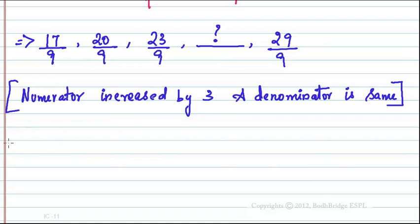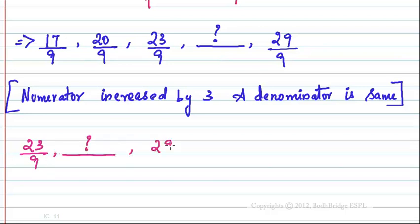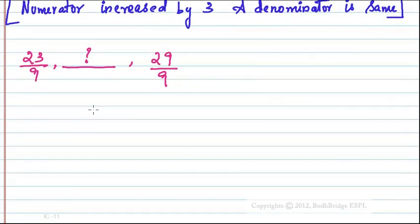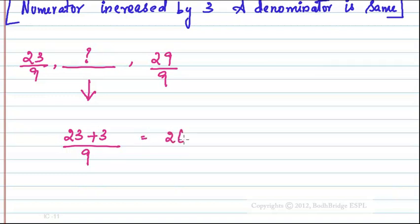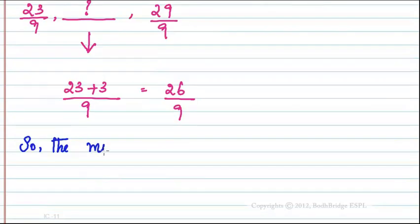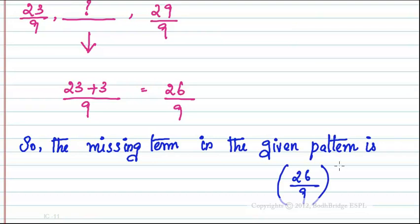We need to find the middle term. The third term is 23/9 and the fifth term is 29/9. Since the denominator stays the same at 9 and all numerators increase by 3, the missing fourth term is 23 + 3 = 26/9.